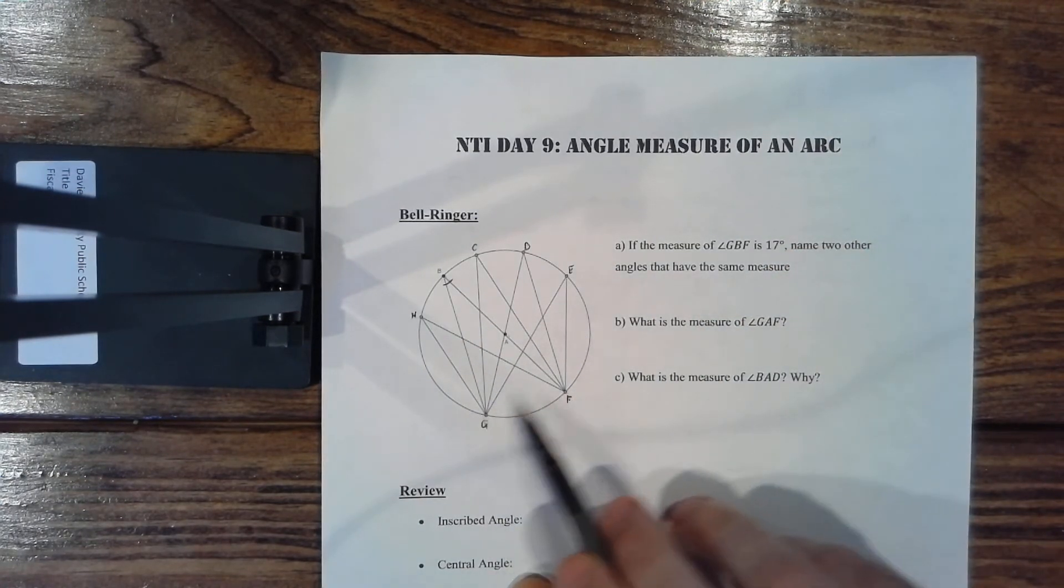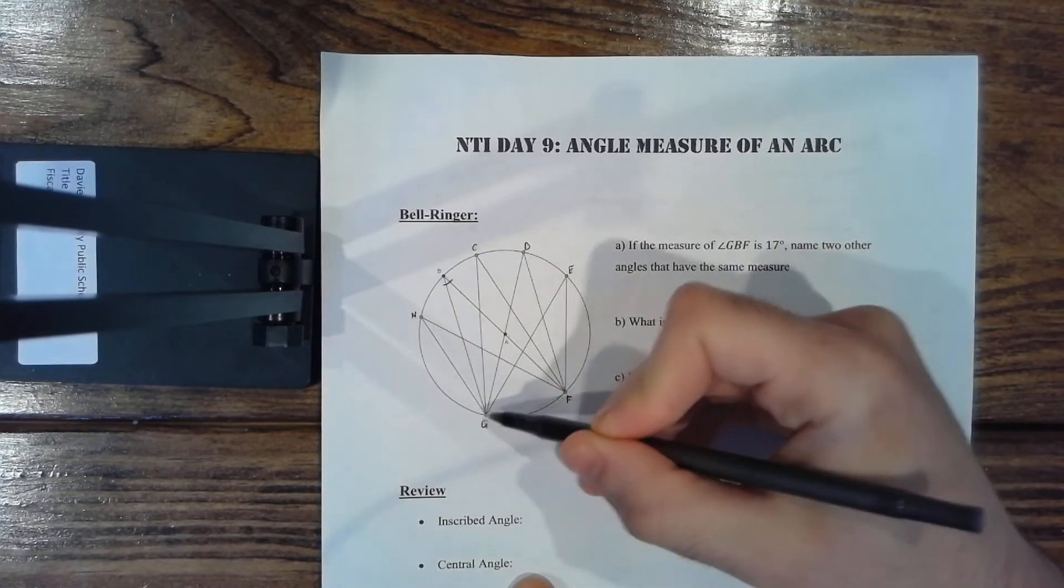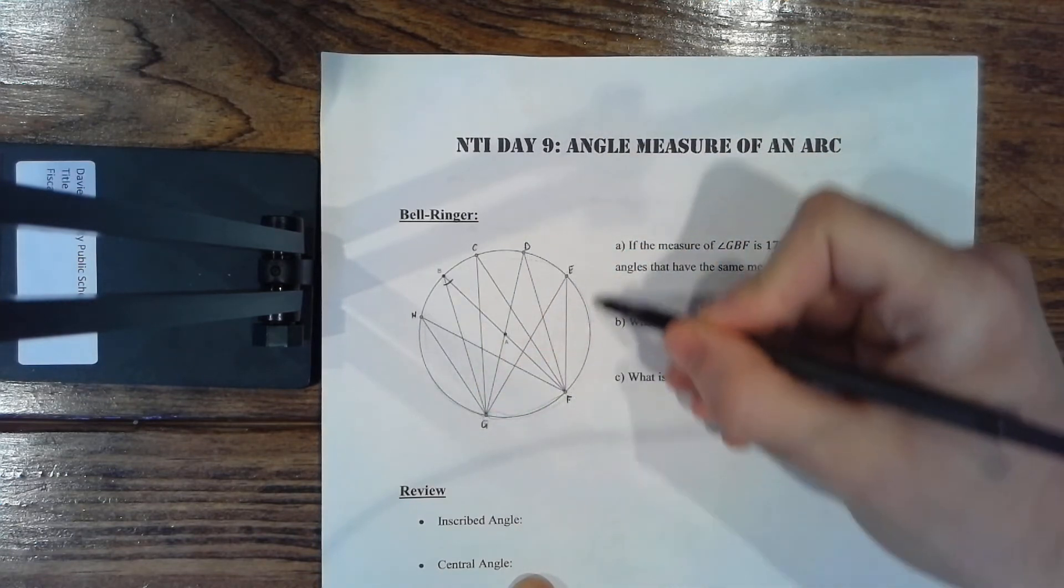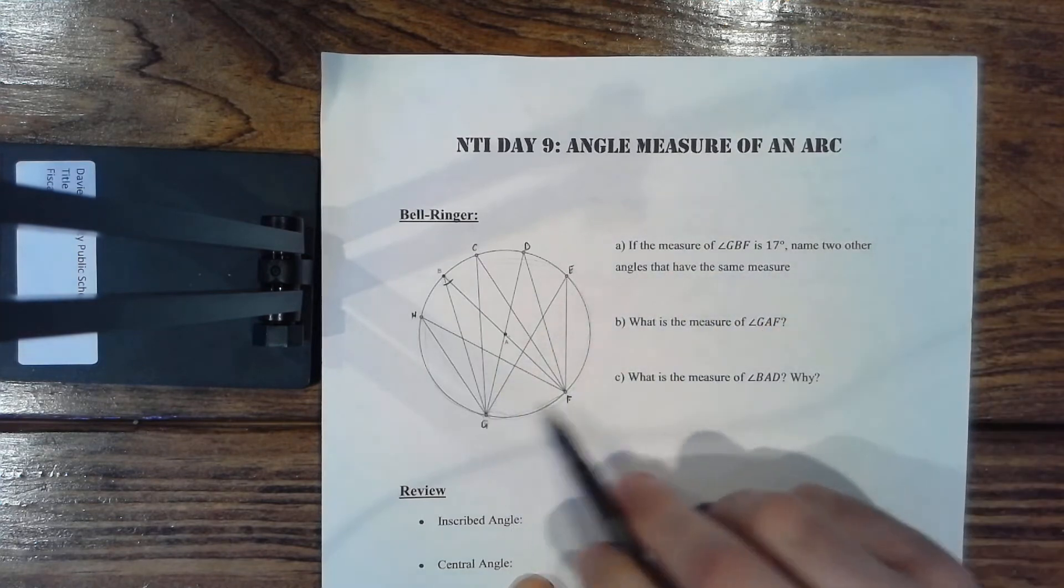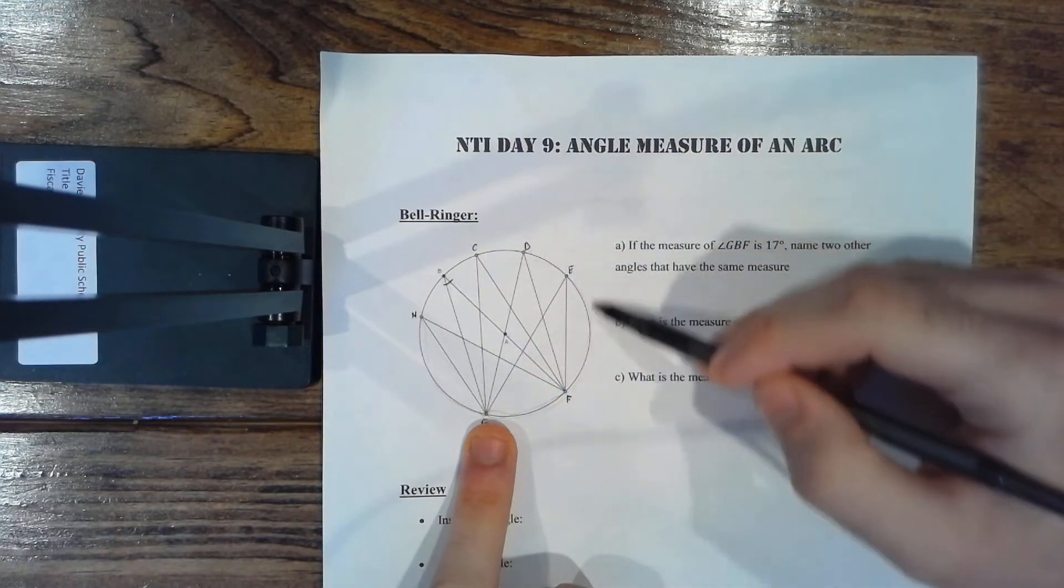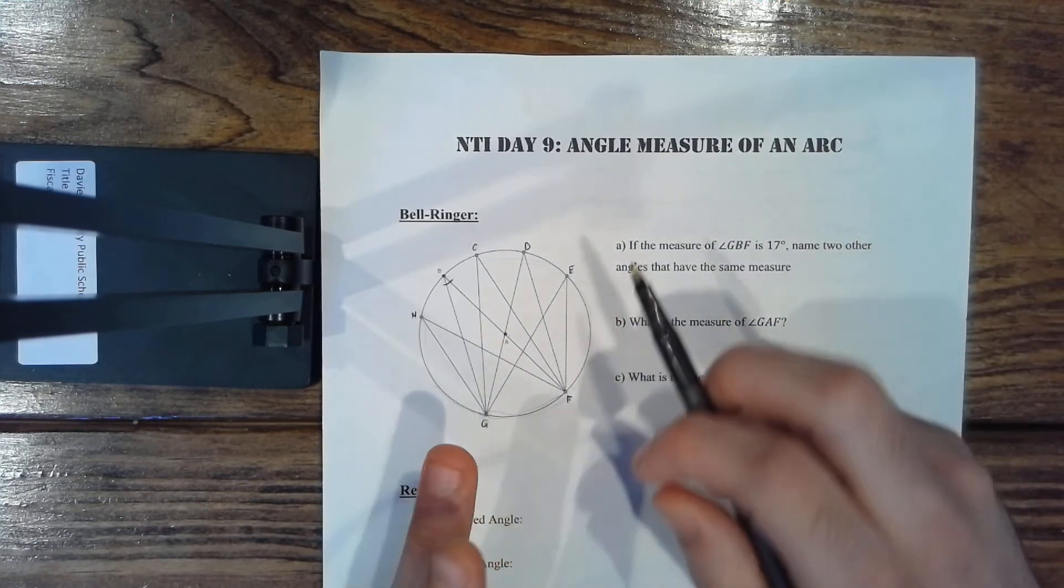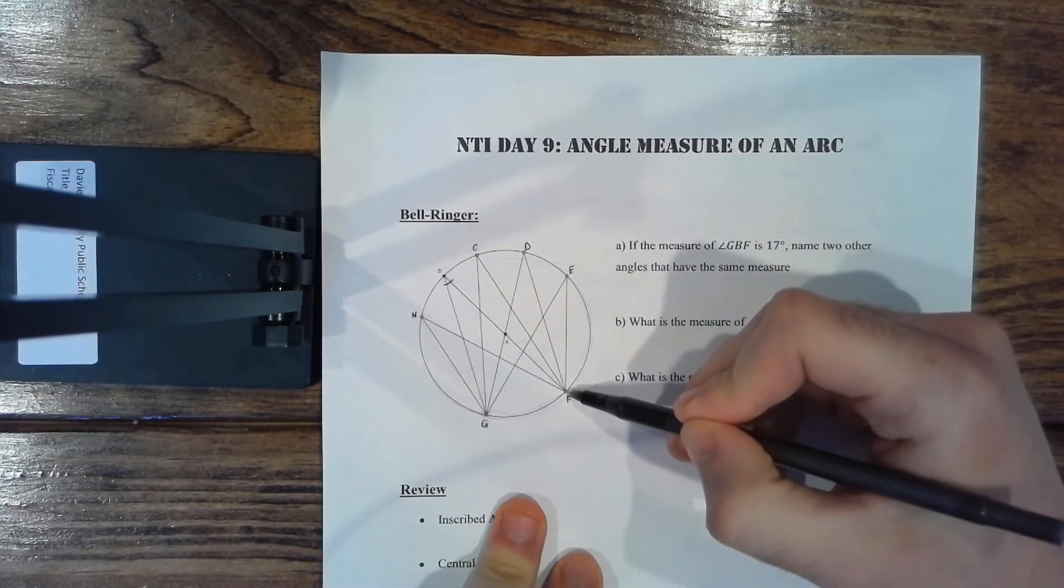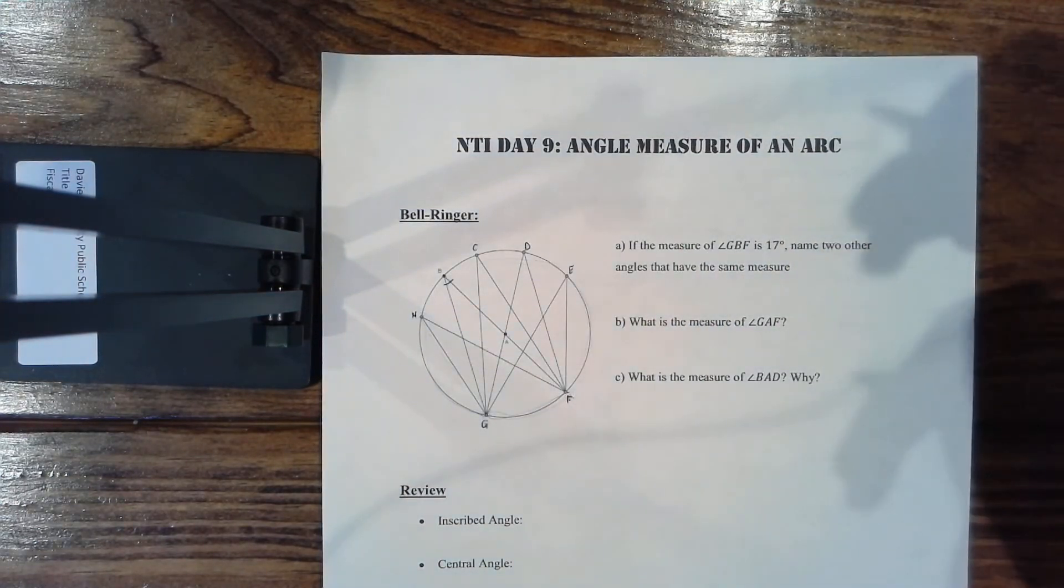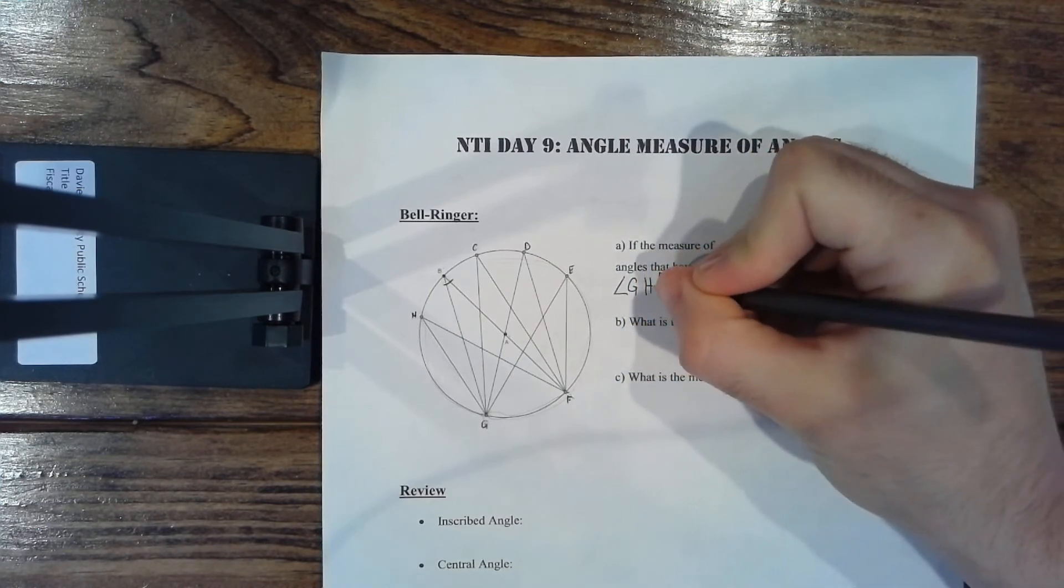So if you notice, you have points G and F down here. Here is the minor arc between G and F, and then here is the major arc of the circle between G and F. If G and F are going to be these fixed points, the third point anywhere on this major arc is going to form the same angle. So for example, what that means is GBF is going to be the exact same angle measure as GHF. So I'll just say, for example, angle GHF.